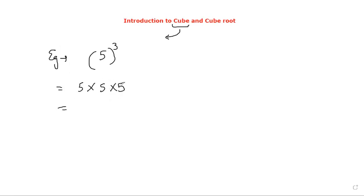So 5 into 5 is 25, 25 into 5 is 125. That's the basic answer. That is something what is called cubing.